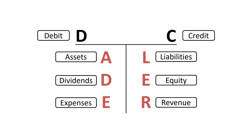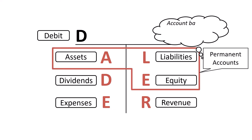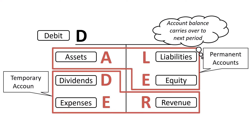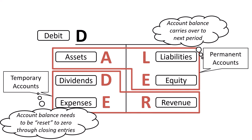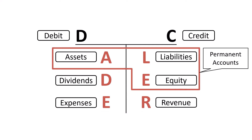Let's group the accounts slightly differently, into permanent accounts and temporary accounts. Assets, liabilities, and equity are permanent accounts — their account balance carries over to the next period. Dividends, expenses, and revenue are temporary accounts. These accounts have to be reset to zero prior to starting a new accounting period. That's what closing entries do: closing the temporary accounts to a balance of zero and transferring the outstanding balance to one of the permanent accounts — more specifically, equity.